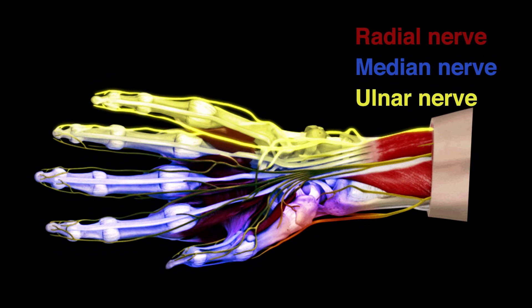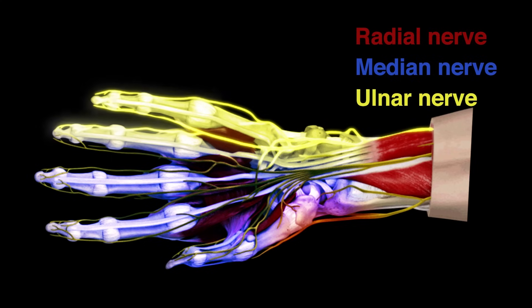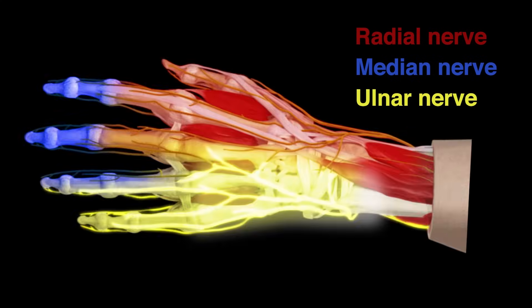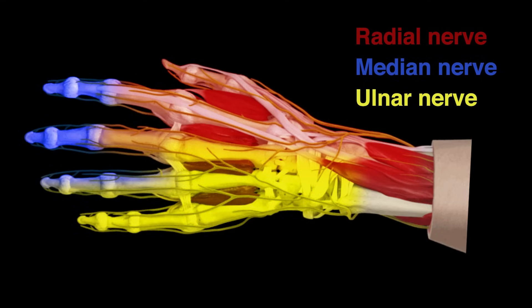The ulnar nerve is located medial to the ulnar artery at the wrist and provides sensation to the entire fifth digit, half of the fourth digit, and the medial aspect of the hand and wrist. The sensory distribution of the ulnar nerve is shown in yellow. These nerves can be blocked independently or in conjunction with one another as necessary to provide anesthesia to different parts of the hand.